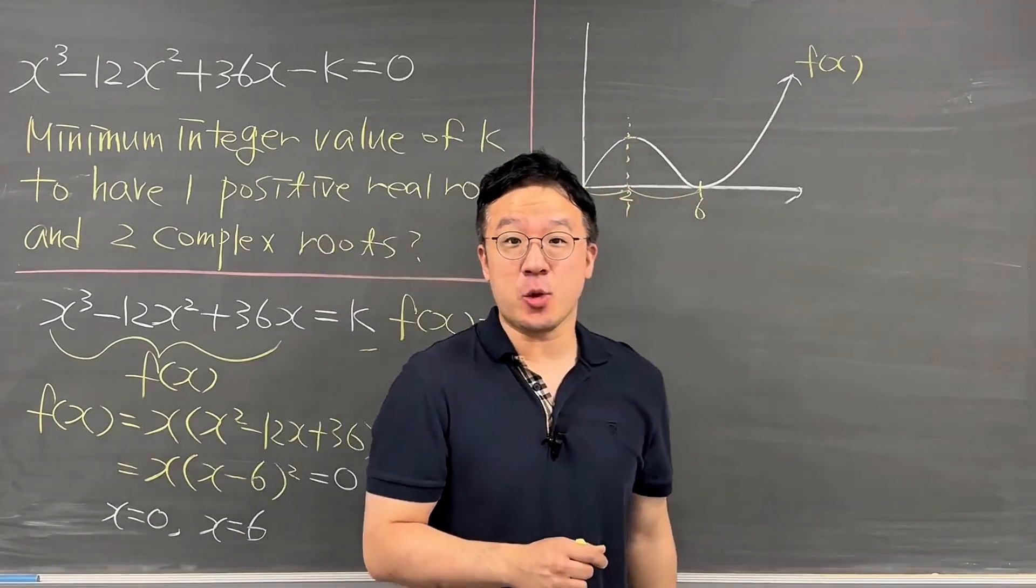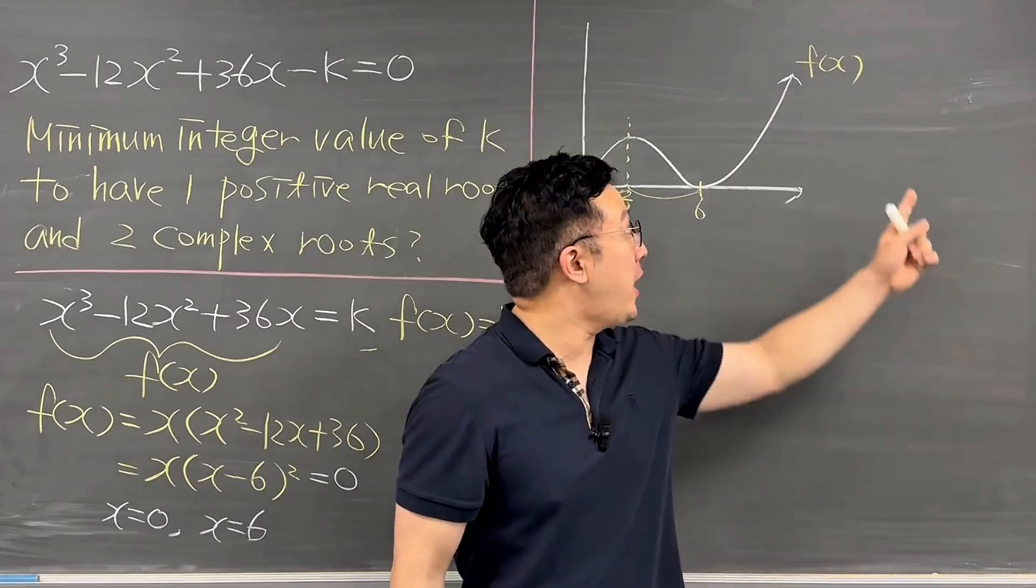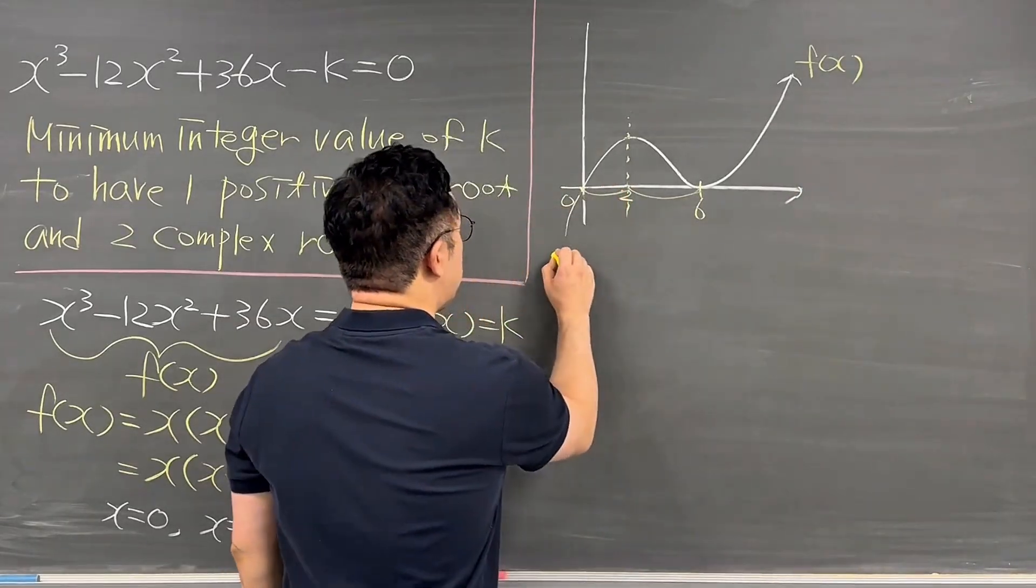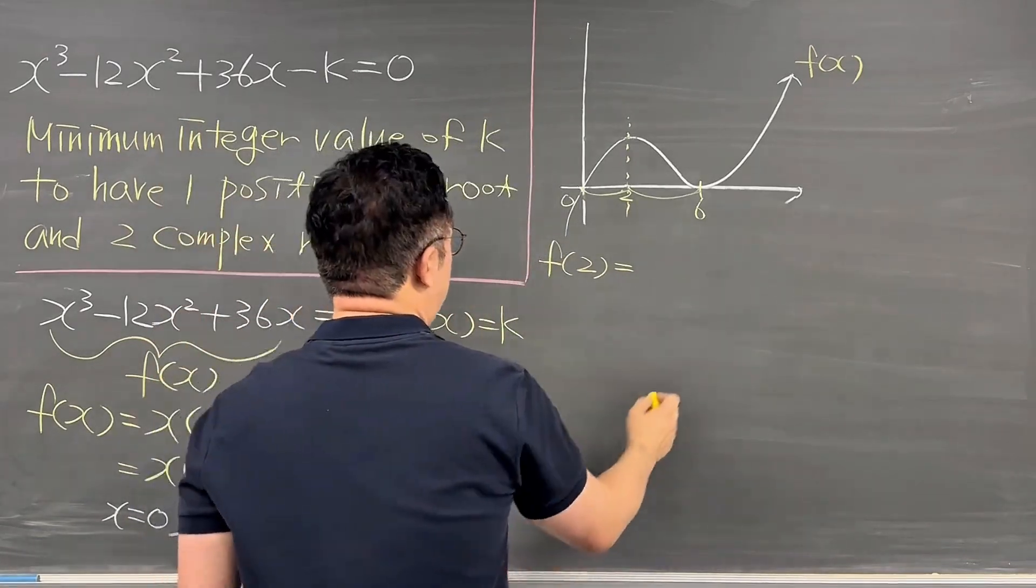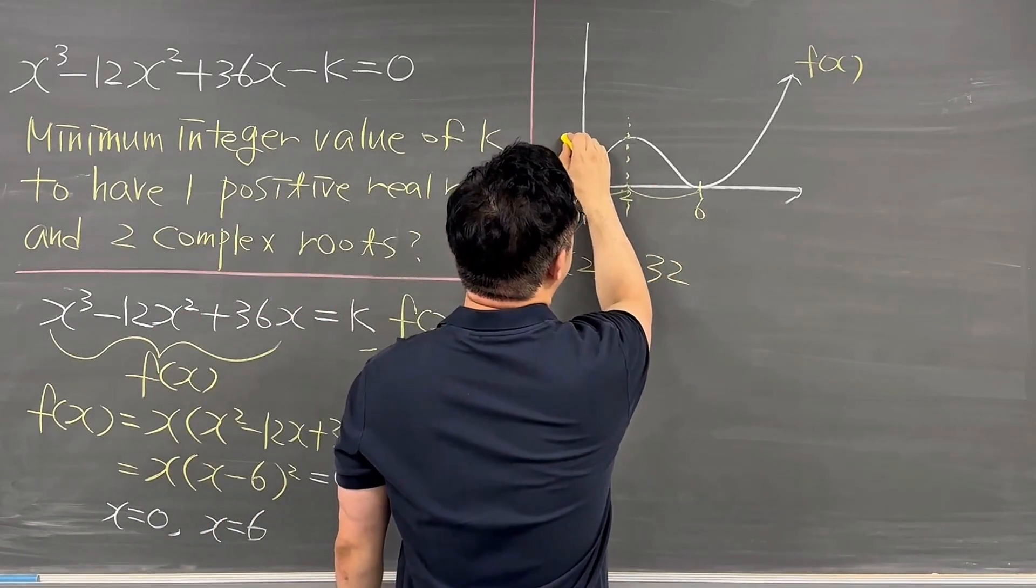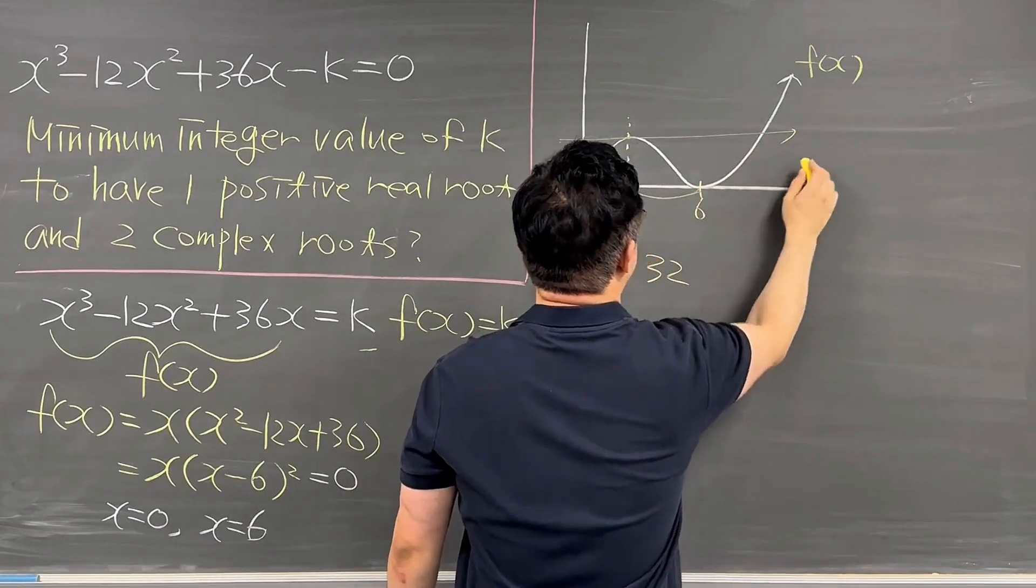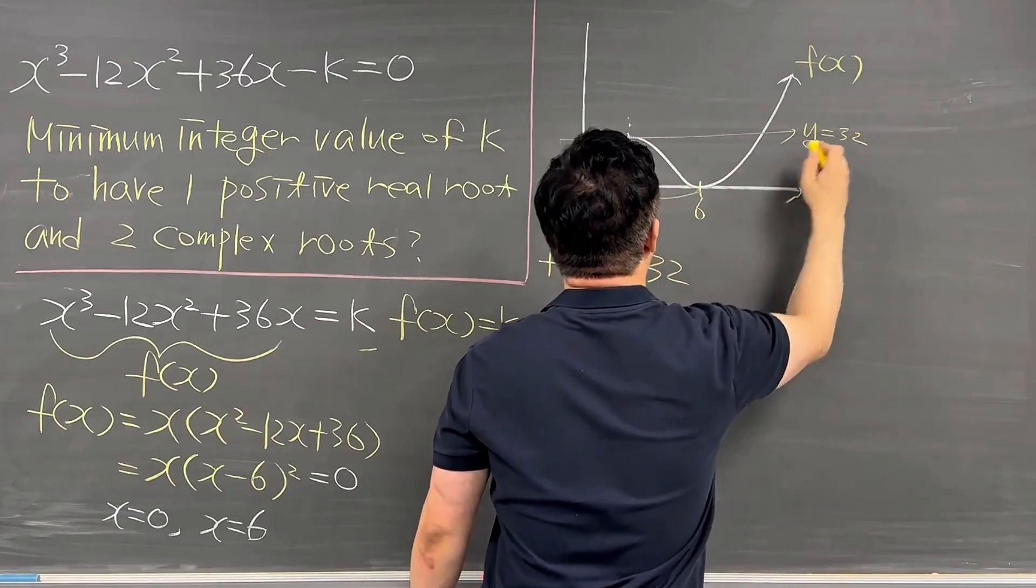Okay, so the local max y value is going to be obtained if you plug in 2 to your x of f(x). So that's why f of 2. Plug in 2 to the x, then you will be having 32. So that's why now this y is 32.